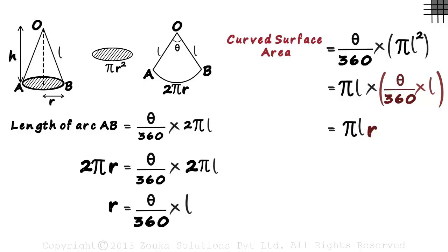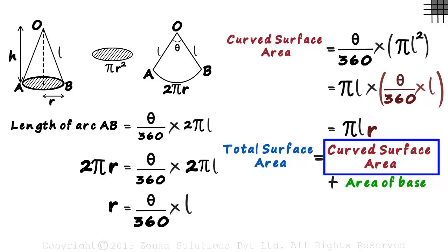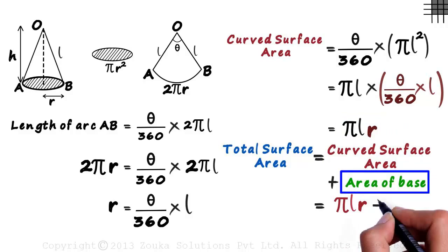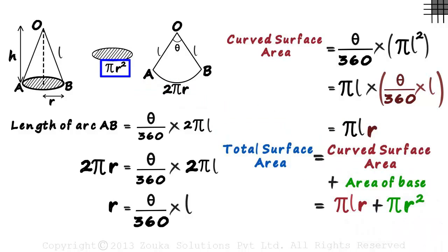Now it's very simple. The total surface area of the cone will be the curved surface area plus the area of the circular base. The curved surface area as we know is pi L R. And the area of the base is pi R squared. Both the terms have pi R as their common factor. Taking pi R common, we write the formula as pi R multiplied by L plus R. This is the formula for the total surface area of a right circular cone.